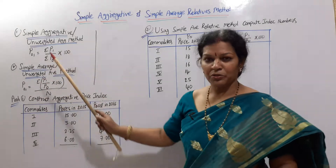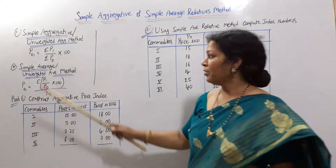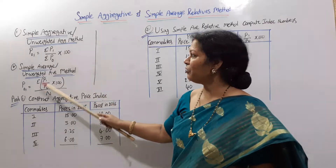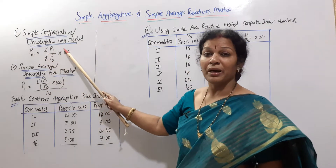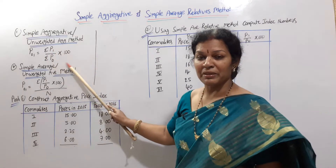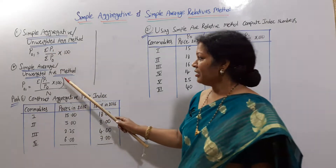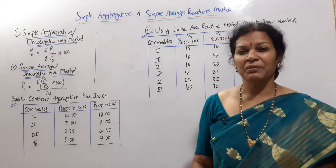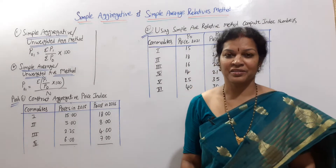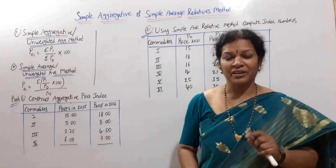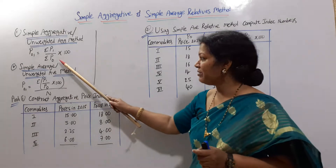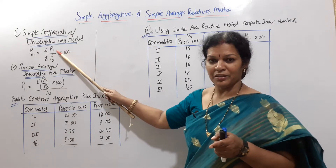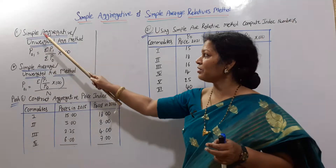For these two methods we use a formula. The formula is P01. P01 is equal to sigma P1 divided by sigma P0 into 100. Here, P is price. P0 is the base year price, and P1 is the current year price. So it is current price divided by base price into 100. This is the simple aggregative method.